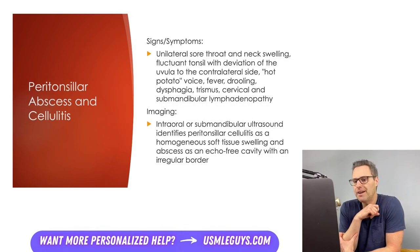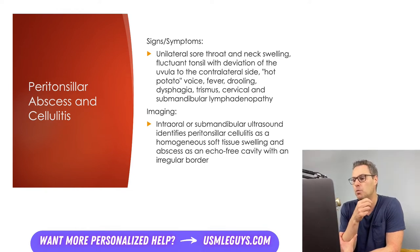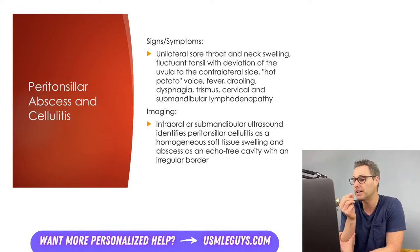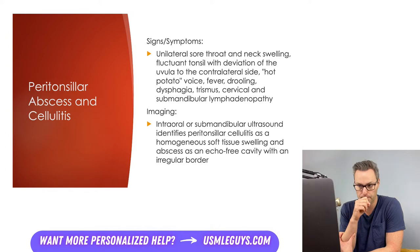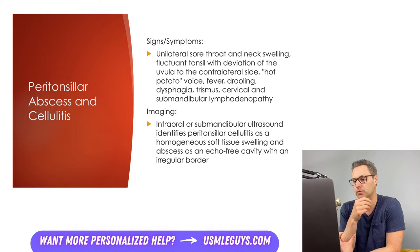Next up, we've got peritonsillar cellulitis and peritonsillar abscess. Both conditions involve tissue between the capsule of the palatine tonsil and the pharyngeal muscles — cellulitis is characterized by inflammation alone, while the abscess is characterized by a discrete collection of purulent material, usually at the superior pole of the tonsil. The abscess is usually polymicrobial, with group A Strep, Staph aureus, and respiratory anaerobes present. Typically, infection progresses from tonsillitis or pharyngitis to cellulitis, and finally to abscess formation.